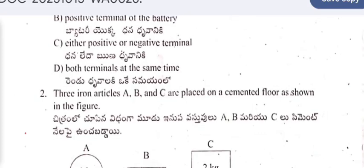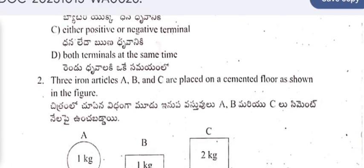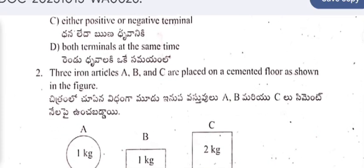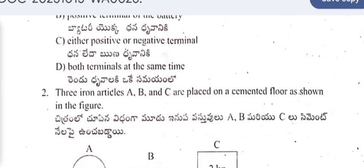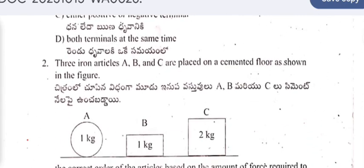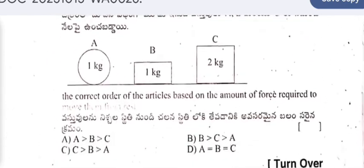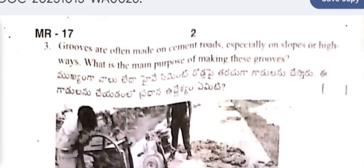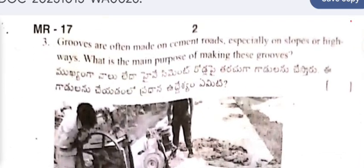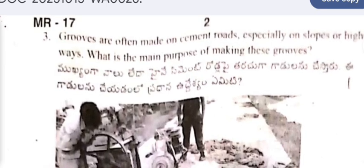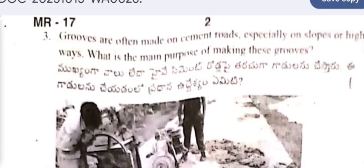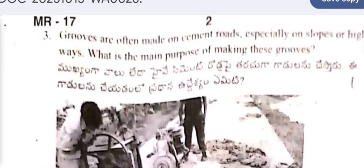Question 2: Iron articles A, B and C are placed on a cemented floor as shown in the figure. Question 3: Grooves are often made on cement roads, especially on slopes or highways. What is the main purpose of making these grooves?